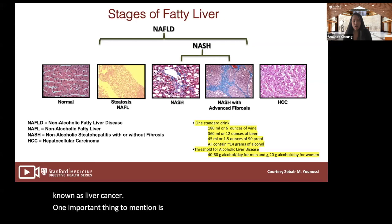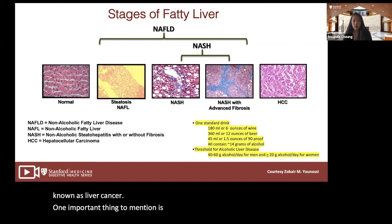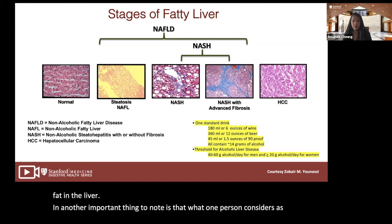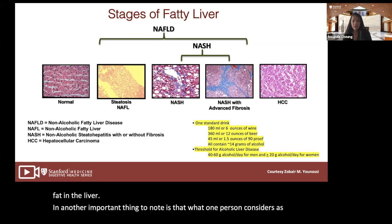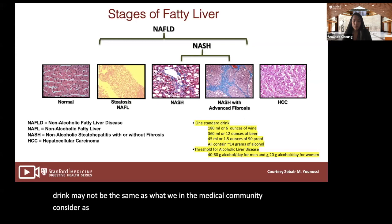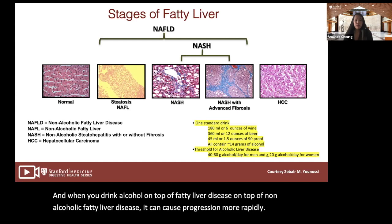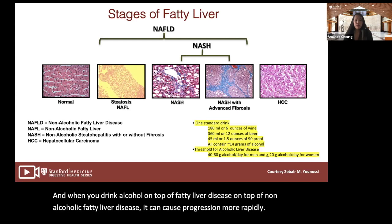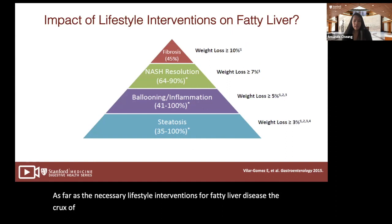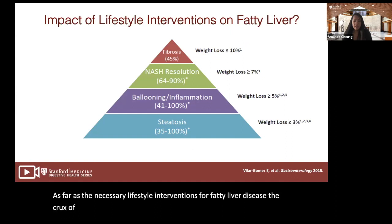It's important to note that alcohol can also cause steatosis, or fat in the liver. What one person considers a drink may differ from the medical definition — for example, six ounces of wine equals one drink, as does 12 ounces of beer or one and a half ounces of liquor. Drinking alcohol on top of non-alcoholic fatty liver disease can cause more rapid progression. The crux of treatment for fatty liver disease is diet, exercise, and weight loss.